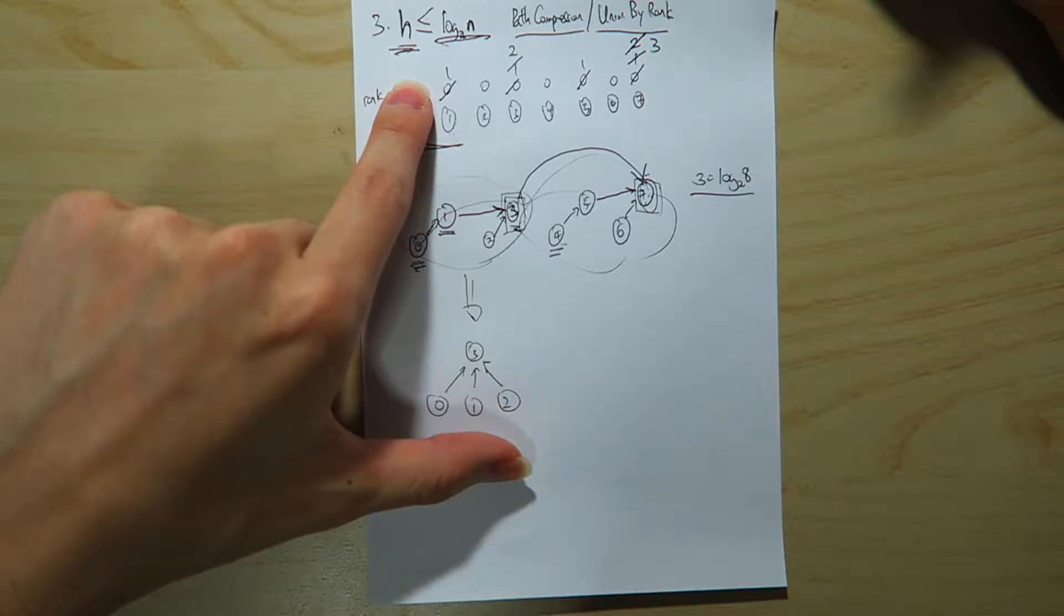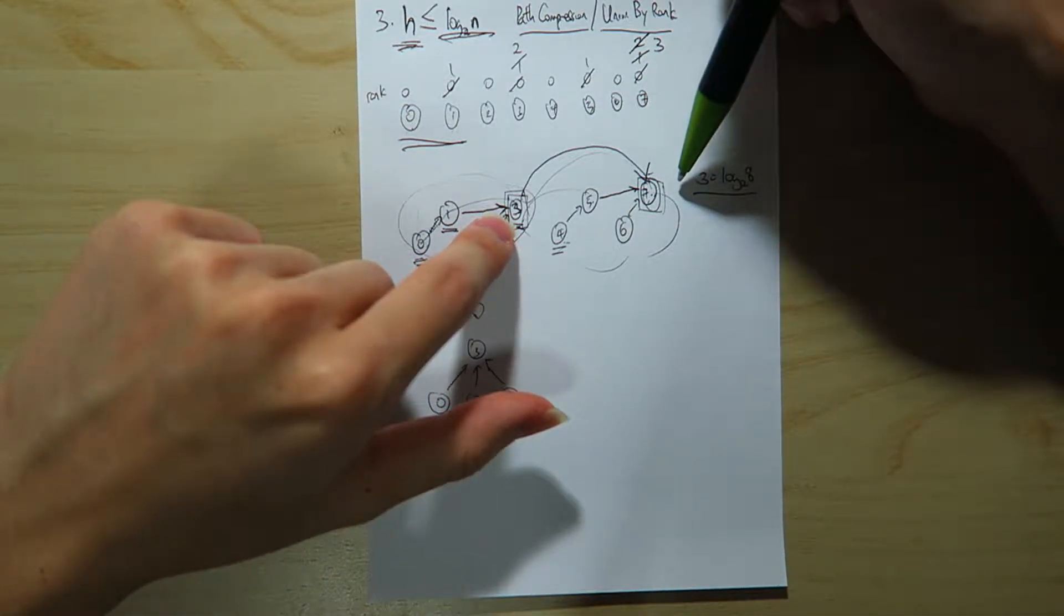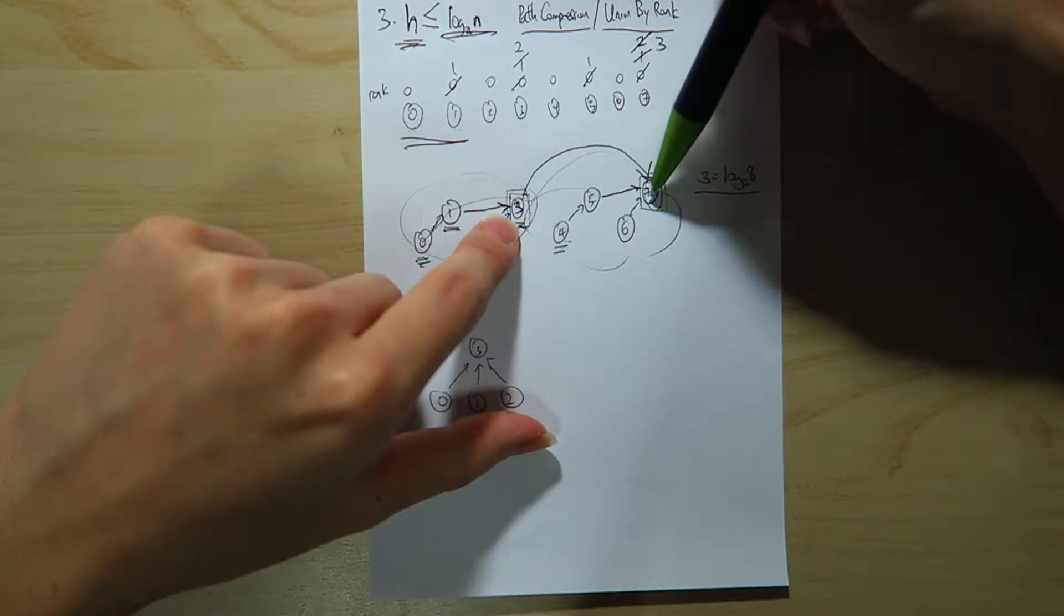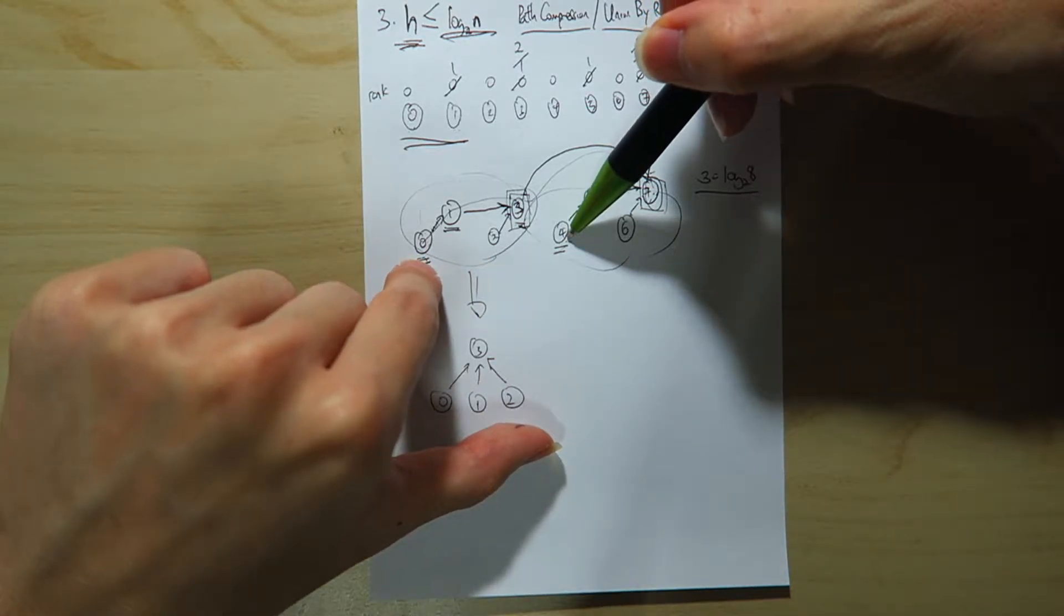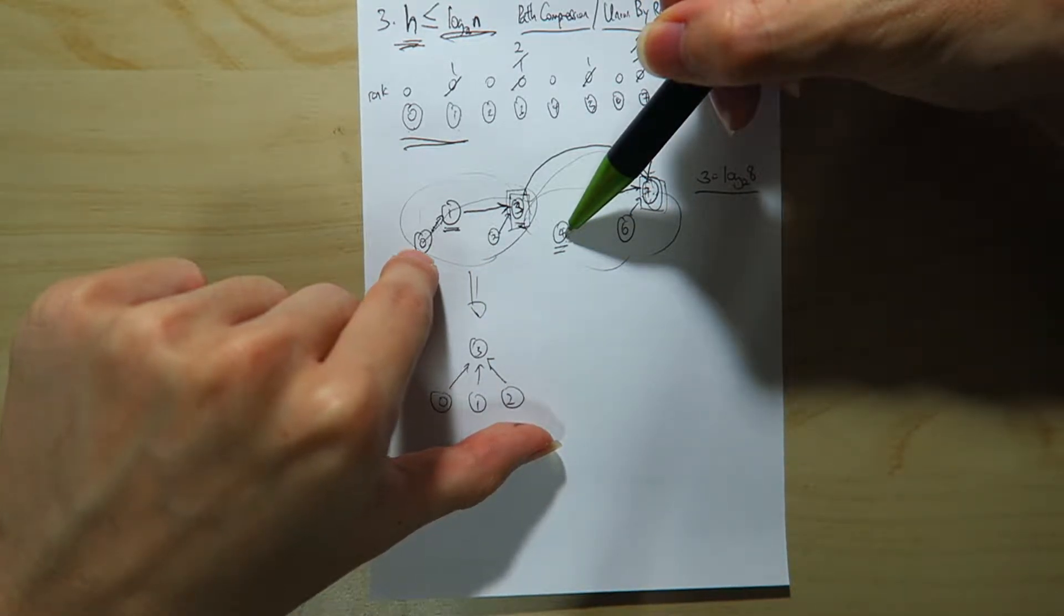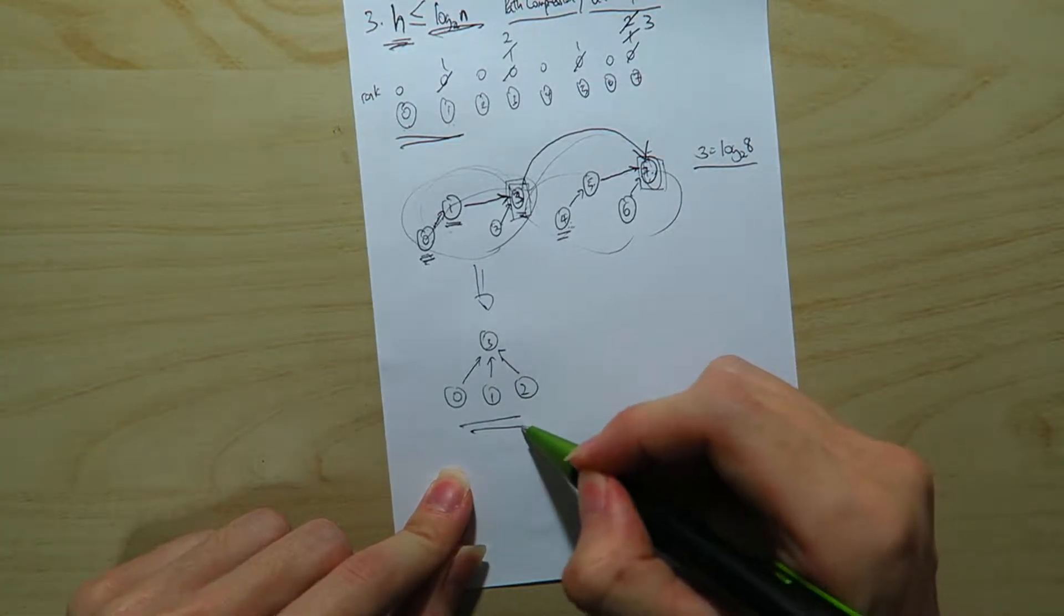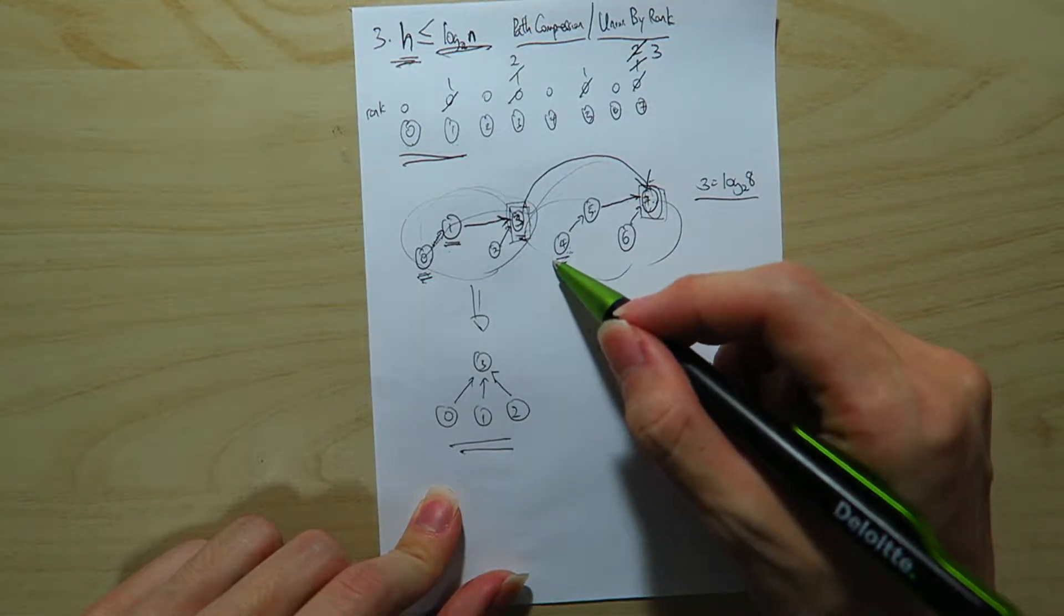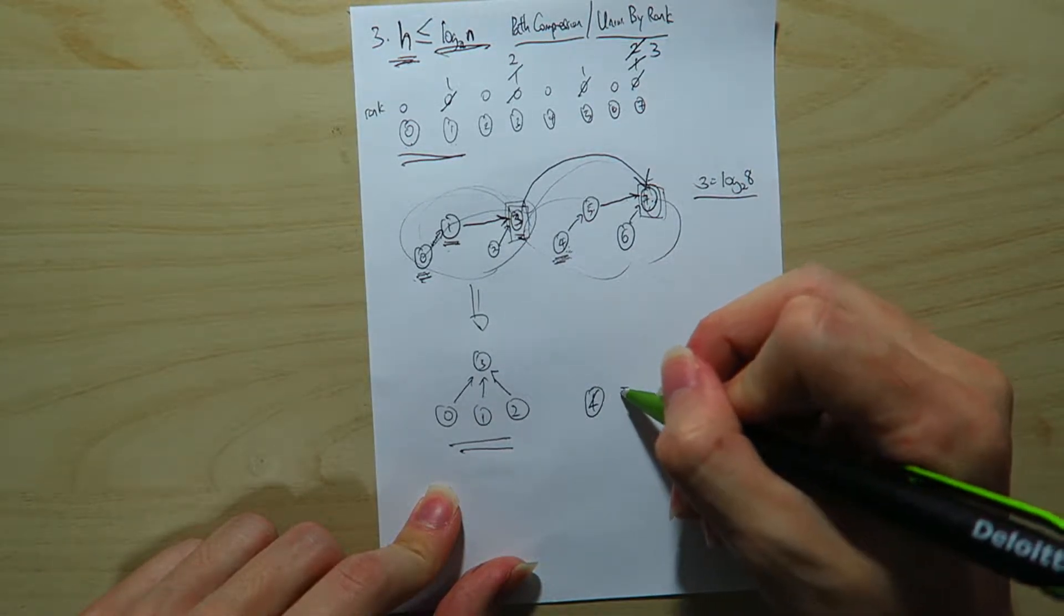The minimum is quite simple. Basically, instead of calling merge union sets on the parent of the pointers, always call union sets on the children, on the leaf, right? Because when you do that, basically what you're going to do is you're going to get this, right? 0, 1, 2, 3. Similarly, if you union set, let's say 0 and 4, before you even union, you're going to get this, right?